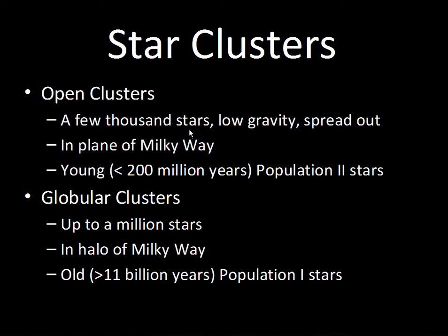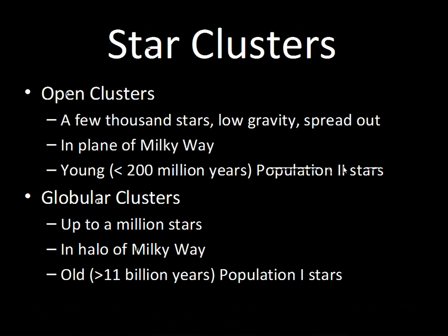There are two types of star clusters. Open clusters, sometimes called galactic clusters, have relatively low star counts — a few hundred to a few thousand — and the gravity between these stars is not enough to keep them from spreading out. Over time the cluster disperses and the stars spread out from where the gas cloud was that they formed from and can no longer be recognized as a cluster. Open clusters are found in the plane of the Milky Way and consist of young stars.